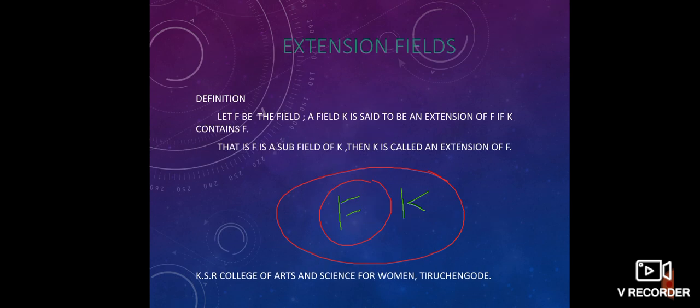Now see the definition of extension field. Let F be the field and a field K is said to be an extension of F if K contains F. That is, the field F is a subfield of K, then K is called an extension of F.